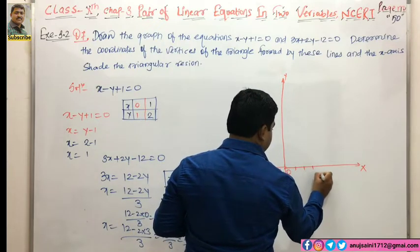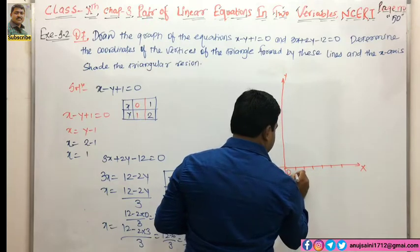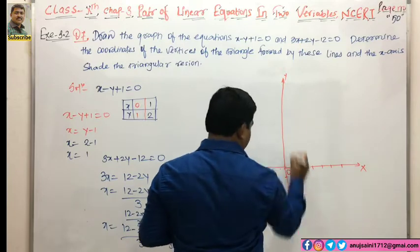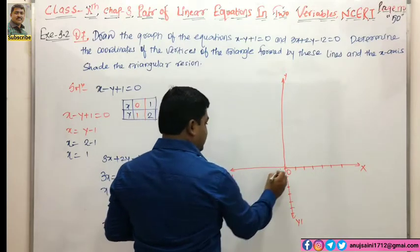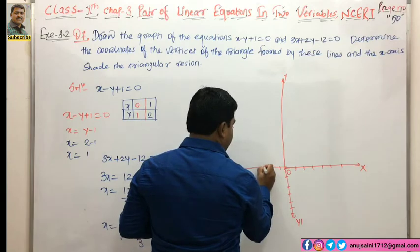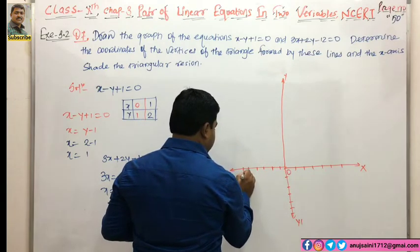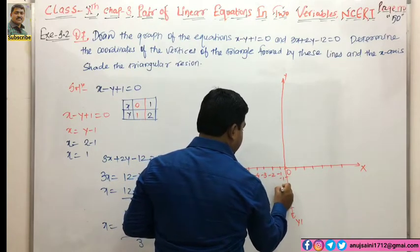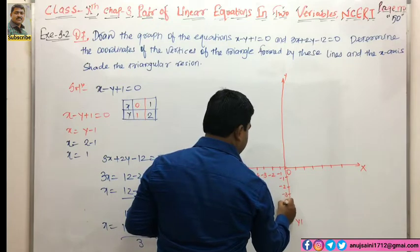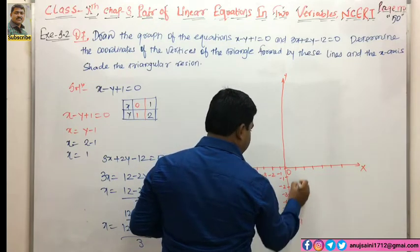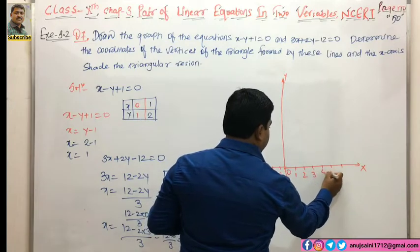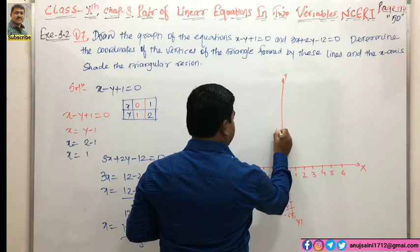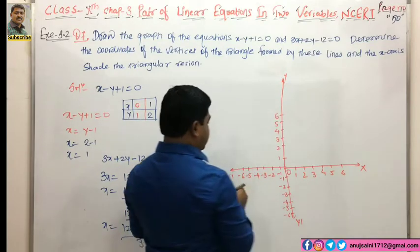Graph पर X-axis और Y-axis पर 1 से 6 और minus 1 से minus 6 तक की values mark करते हैं। दोनों axes को clearly label करें।